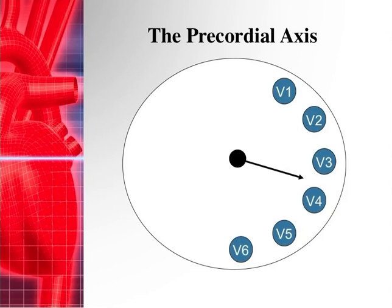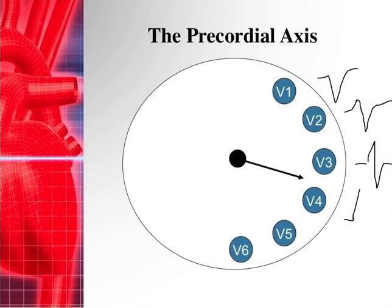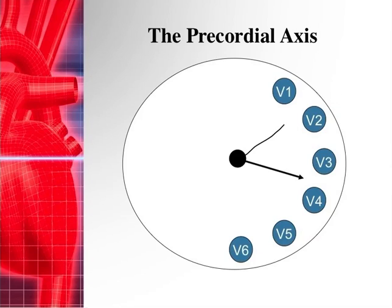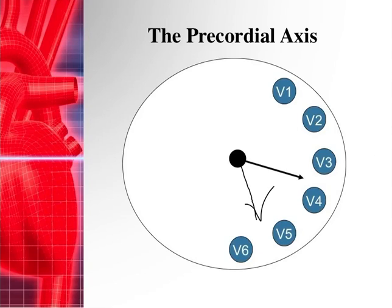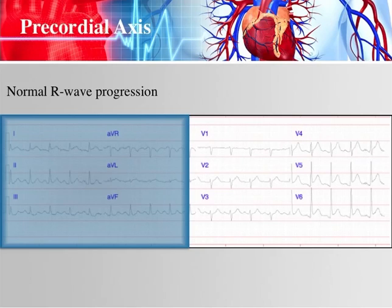Some books describe this as clockwise or counterclockwise rotation of the precordial axis. Imagine your V leads positioned numerically on a clock face — if this were a clock, V1 would be at 12 o'clock, then 1 o'clock, 2 o'clock, and so on. Normal transition occurs right around V2-V4, going from mostly negative to mostly positive QRS. If you transition earlier, between V1 and V2, that's called counterclockwise rotation. If you transition late, as with an anterior wall MI, that's called clockwise rotation — not critical to memorize, but useful when reading 12-lead textbooks.